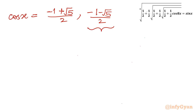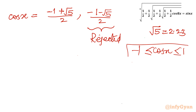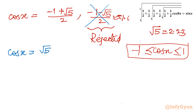Since √5 ≈ 2.23, the second value (−1 − √5)/2 ≈ −1.6, which is outside the range [−1, 1] of cosine — so it is rejected. The first value (−1 + √5)/2 ≈ 0.618 is valid and accepted.